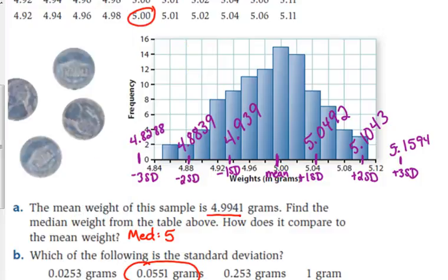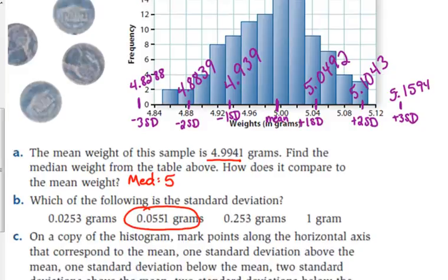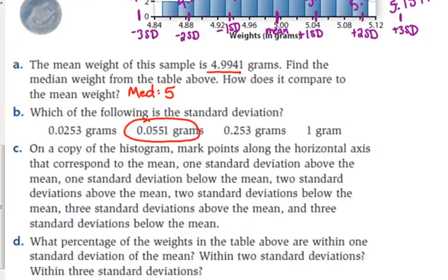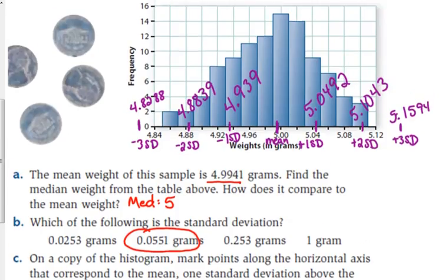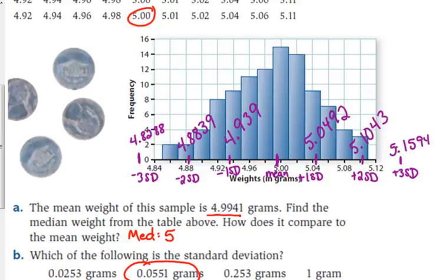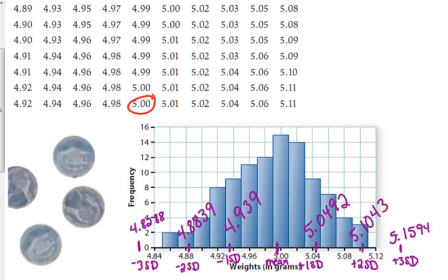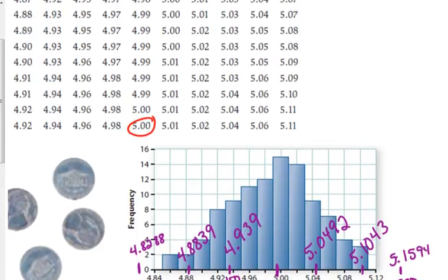Now, the reason why I wrote down these numbers here on my graph are because if you look at the next question at part D, it says what percentage of the weights in the table are within one standard deviation of the mean, within two standard deviations, and within three standard deviations. So, the histogram, obviously, here would be hard to calculate those numbers exactly because we don't know exactly how many in this bar right here are less than this value. So, that's why we have the table, and it's great that the table is in order.